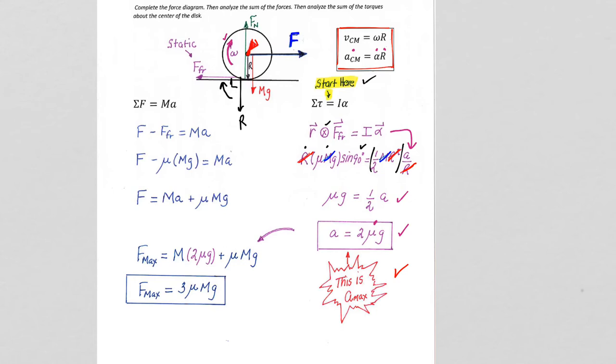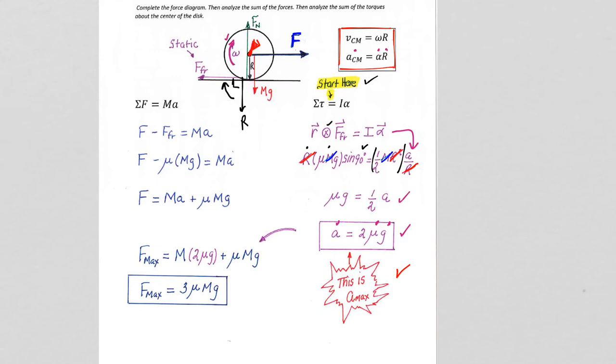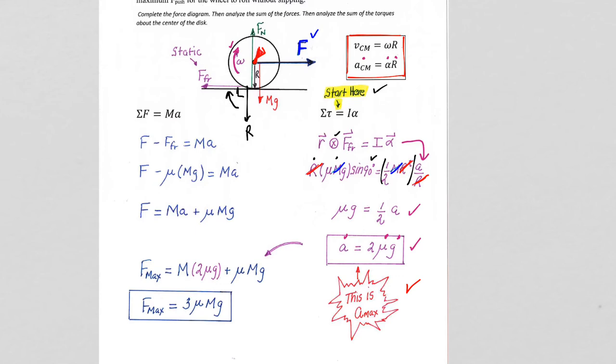g is 9.8. Whatever number that is, that's the acceleration that will correspond to rolling without slipping. It can be less than that value. It cannot be greater. If it's greater, then as we said when we started our discussion, the force will still push the wheel forward. The wheel will still spin, it'll still rotate, but not with a center of mass equals alpha r.